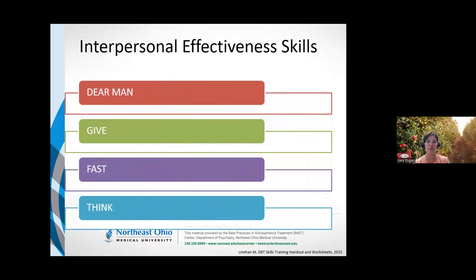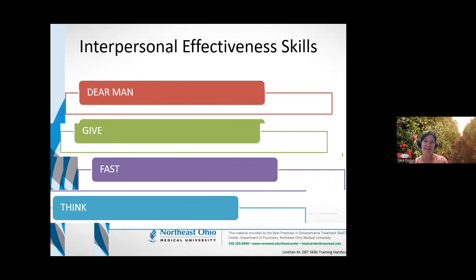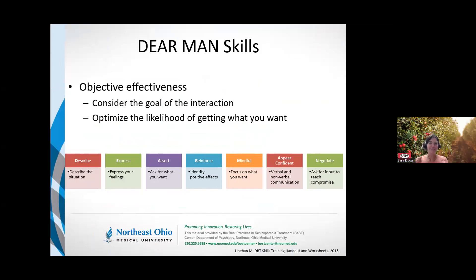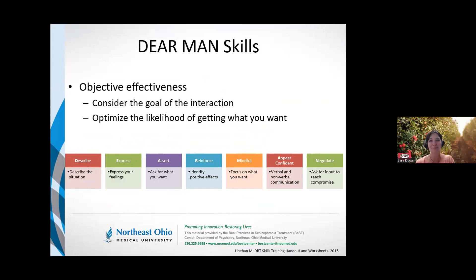We're going to look at four tools: DEAR MAN, GIVE, FAST, and THINK. They're all mnemonics for other things. DEAR MAN is one of the skills that can be used for objective effectiveness. It's really important to consider what's your goal of this interaction. This is a skill that can be used when you're lobbying a request — it can help optimize the likelihood that you're going to get what you want. Maybe not exactly what you want, but at least something close.